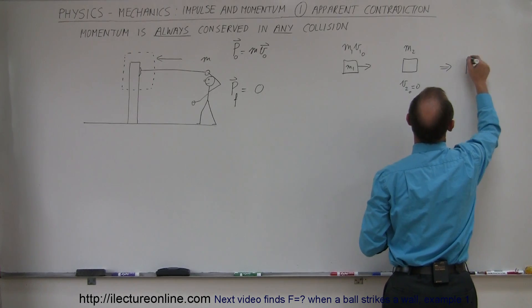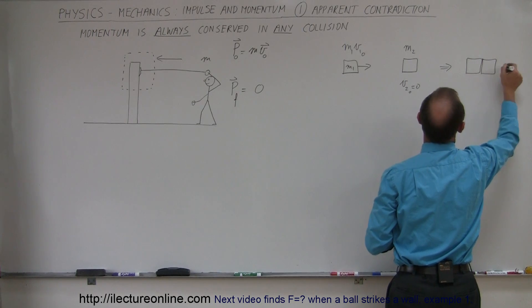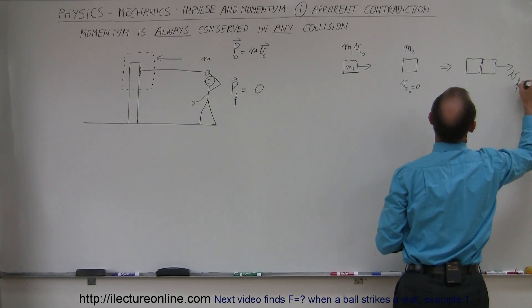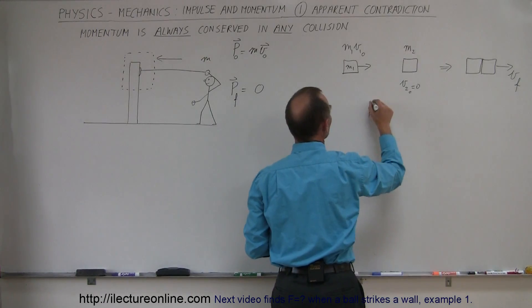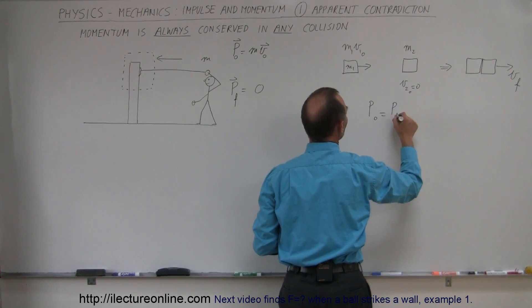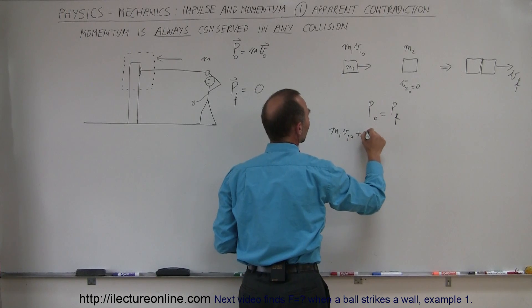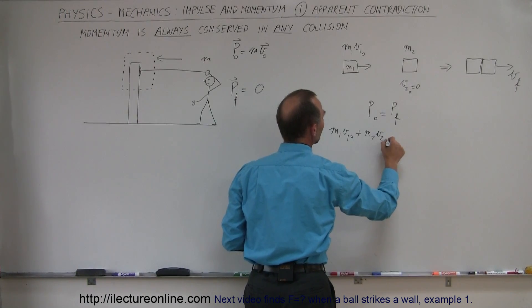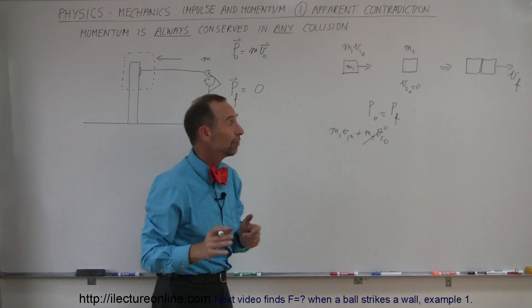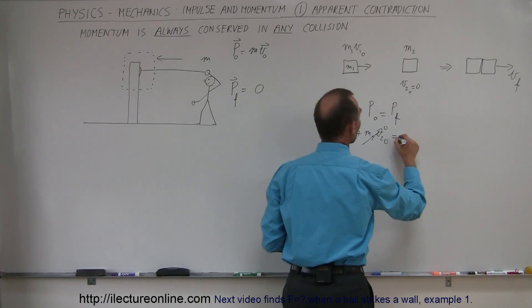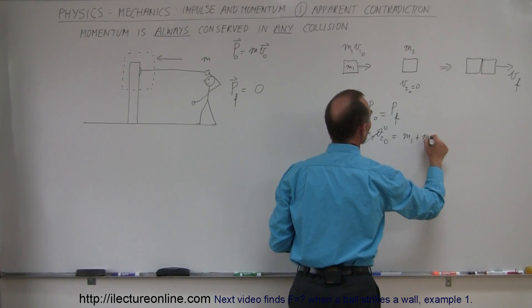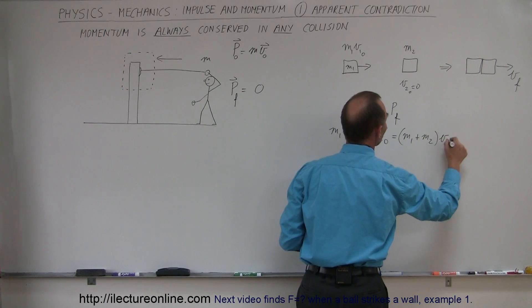And then after the collision, they will stick together and will have a common final velocity, V final. And so we can say that momentum initial equals momentum final. And so M1, V1 initial plus M2, V2 initial, which of course is zero because V2 was zero, M2 was not moving, equals M1 plus M2 times V final.